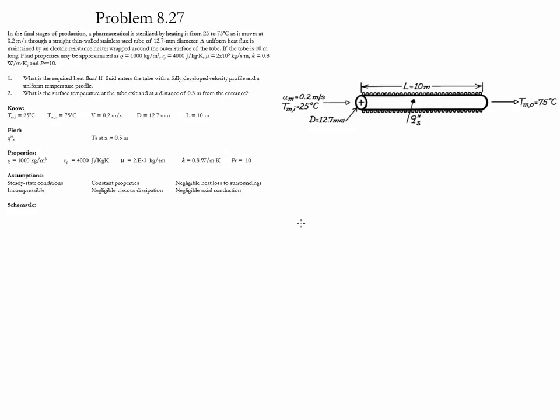There is an electrical resistance heater wrapped around the tube which provides a uniform heat flux. One of the goals of the problem is to calculate the value of that required heat flux in order to reach the given temperatures. The second goal is to determine the surface temperature at the exit of the tube as well as at a distance of 0.5 meters from the entrance.